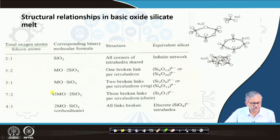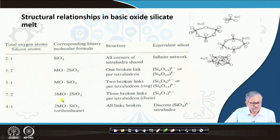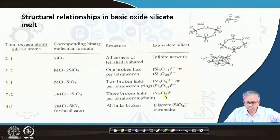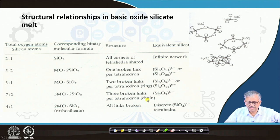If I further increase the basic oxide to 3 moles of basic oxide with 2 moles of SiO2 (oxygen to silicon ratio 7:2 = 3.5), then three links are broken. With three broken links, you get Si2O7 6-. When three links are broken per tetrahedron, the structure makes a chain - a chain structure - when three links are broken.